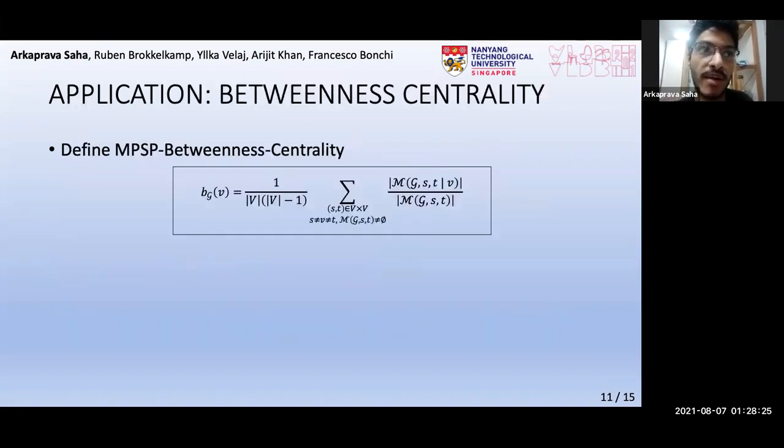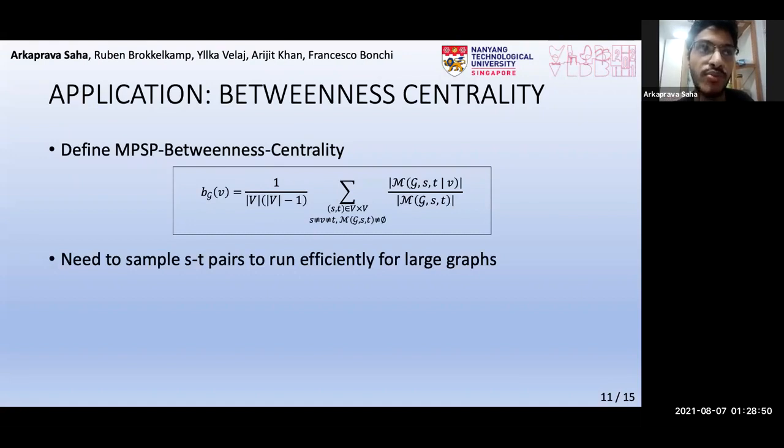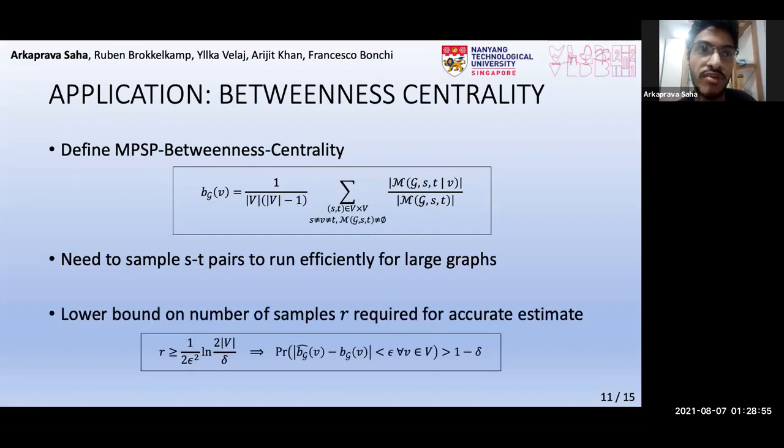We now show an application of our method to define a novel concept of betweenness centrality in uncertain graphs, as shown in this equation. It's analogous to that of betweenness in deterministic graphs, except that we use the set M_G(s,t), which is the set of MPSPs between S and T. Note that the summation needs to be across all node pairs, which is prohibitively expensive for large graphs. Hence, we need to sample node pairs to make it efficient. It can be shown that, if the number of samples is at least a certain number, then with a high probability, the centrality estimate is very accurate for every node.